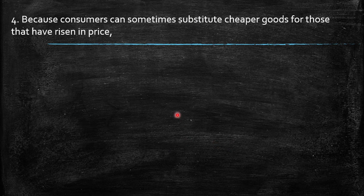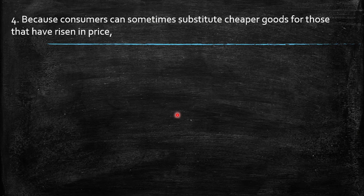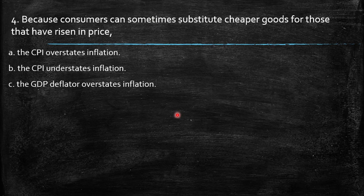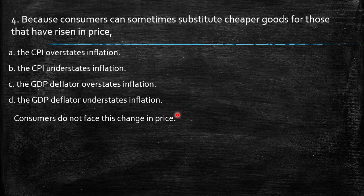Because consumers can sometimes substitute cheaper goods for those that have risen in price, the CPI overstates inflation, the CPI understates inflation, the GDP deflator overstates inflation, or the GDP deflator understates inflation.